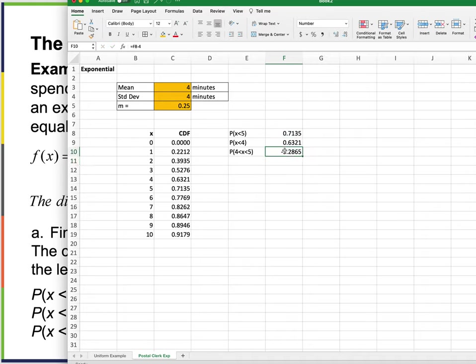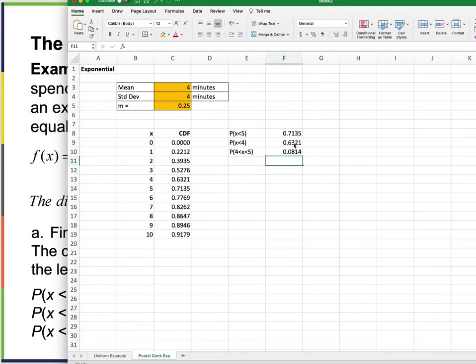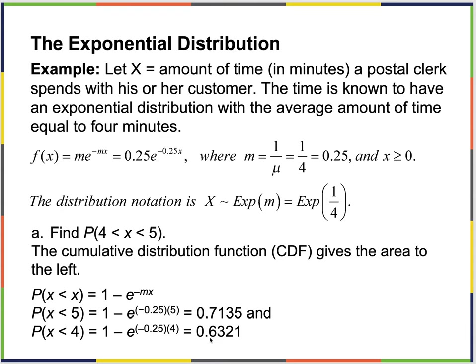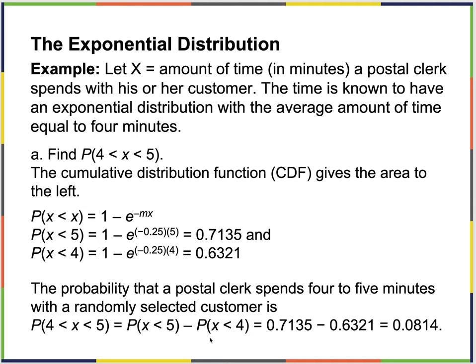P(X < 5) = 0.7135, P(X < 4) = 0.6321, and P(4 < X < 5) = 0.7135 minus 0.6321 = 0.0814, which is about 8.14%.